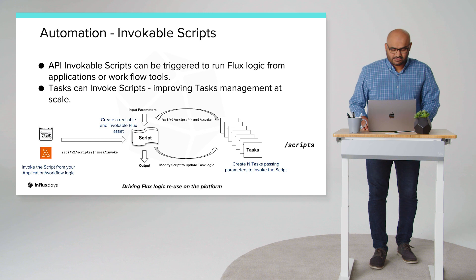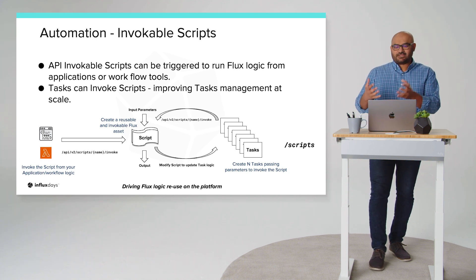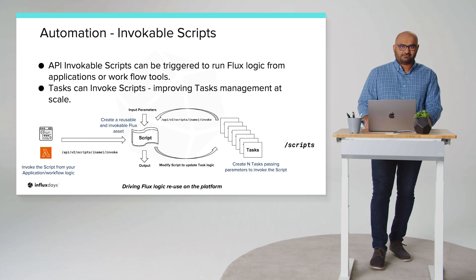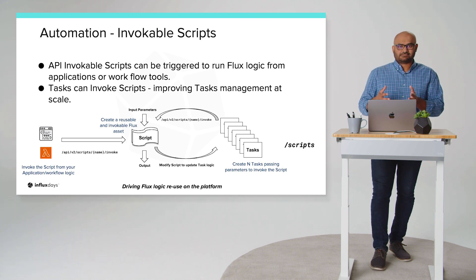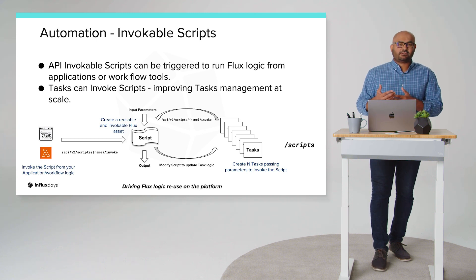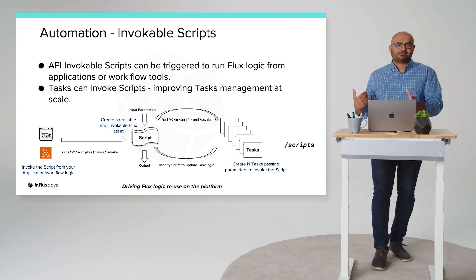The second way is to invoke a script via an API on demand. This is really convenient to kick off query or transform logic from your application. Even better, the logic runs on the DB platform and not on your application, which is a huge benefit. The third way is for task management at scale. Tasks can now reference scripts, meaning you can have several tasks that depend on the same script but differ by the input parameters. Any time you need to change the underlying logic, simply change the script and all those tasks update — that really helps with task management at scale.